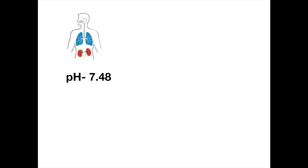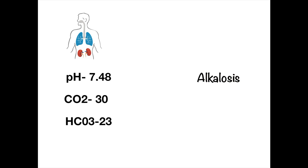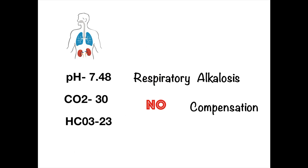Next example: pH is 7.48, CO2 is 30, and bicarb is 23. Looking at the pH — 7.48 — this is alkalosis. Now we look at the cause: CO2 is low. Normal CO2 is 35 to 45, so what's causing the alkalosis is the low CO2 — this is respiratory alkalosis. Bicarbonate is 23, which is within normal range, so this is no compensation.